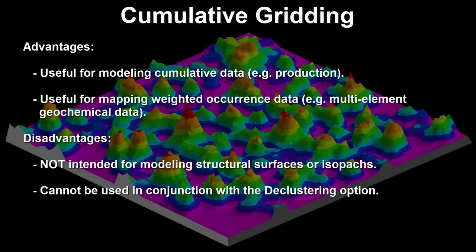Advantages: it is useful for modeling cumulative data such as production, and useful for mapping weighted occurrence data such as multi-element geochemical data.